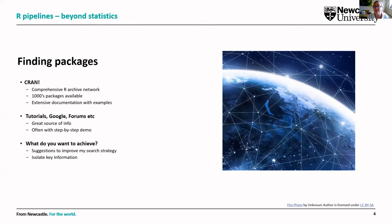So where do I find these packages? I go straight to CRAN — the Comprehensive R Archive Network. It's a massive network with thousands of packages from contributors all over the globe, growing on a daily basis, with extensive documentation and examples. I also use tutorials, Google, and different forums. My basic starting point is always: what do I want to achieve? What is my end goal? Figuring that out helps me pick the packages I need to create these pipelines.